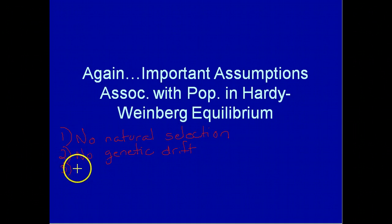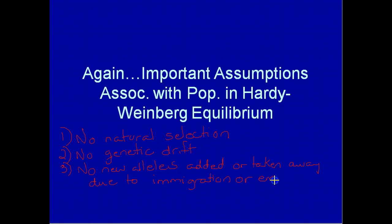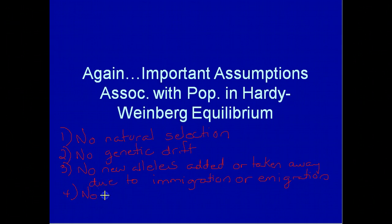You have no new alleles added or taken away due to immigration — people or organisms coming into the population — or emigration, individuals or alleles leaving the population. There are also no new alleles introduced into the population due to mutation.